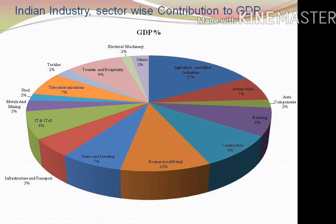Construction industry accounts for 9%, e-commerce and retail 10%, gems and jewelry 7%, infrastructure and transport 5%, IT and ITeS 8%, metals and mining 3%, steel 2%, telecommunication 7%, textile 2%, tourism and hospitality 9%, electrical machinery 2%, and the remaining small sectors contribute around 3% of our whole economy.